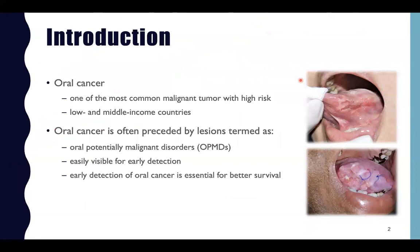Oral cancer is one of the most common malignant tumors with high risk in low and middle income countries. It is often preceded by lesions termed as oral potentially malignant disorders, or OPMDs, which are easily visible for early detection without the need of special instruments, as shown in these two images.